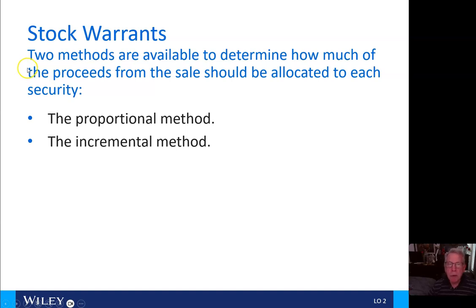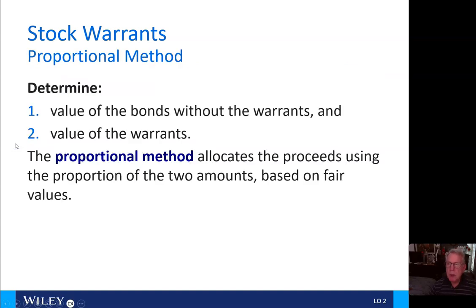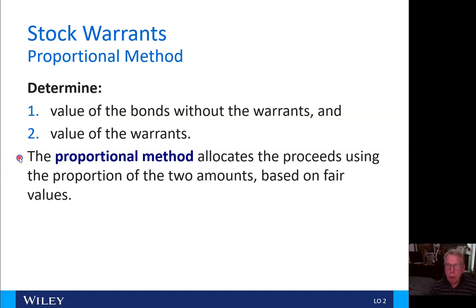There are two methods available to determine how much of the proceeds from the sale should be allocated to each security — just like we had in chapter 13: the proportional method and the incremental method. Under the proportional method, we first determine the value of the bonds without the warrants, and then value the warrants. The proportional method allocates the proceeds using the proportion of the two amounts based on fair values.